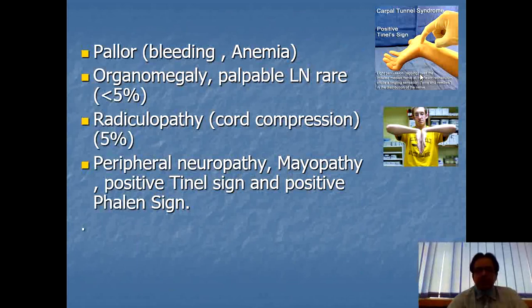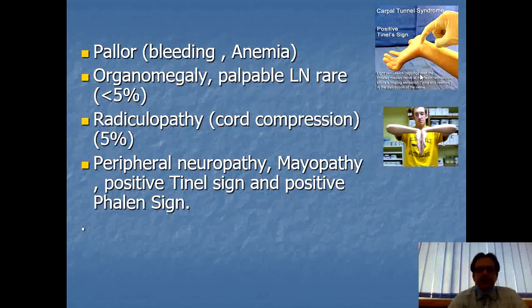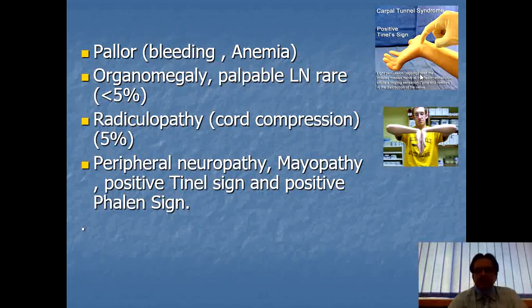Continuing clinical presentation: the patient may have pallor because of bleeding or poor intake — meaning anemia. The patient may have organomegaly, palpable lymph nodes, and hepatosplenomegaly. The patient can have radiculopathy because of cord compression, and similarly peripheral neuropathy and myopathy. The Tinel's sign and Phalen's sign may also be positive.